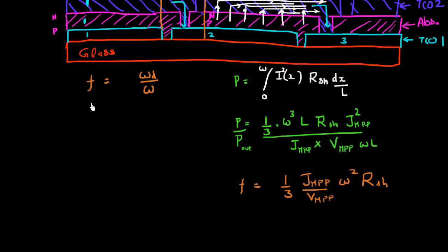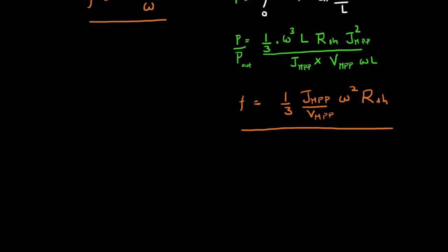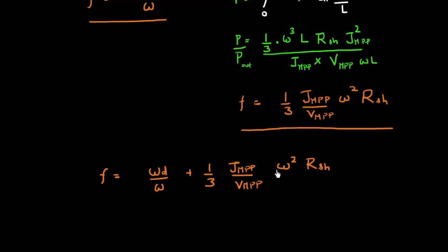So now I have this fraction which is lost due to this dead region, and then I have this fraction which is lost due to this I-squared-R loss. I want to minimize the overall power loss. The total power loss is this loss which happens due to the dead region plus this second term due to the I-squared-R loss. These have different dependencies on cell width: the first term is minimized when you have a large width W, but the second term due to I-squared-R loss is minimized when you have a small width, because with small width you'll have less current crowding and less I-squared-R drop.